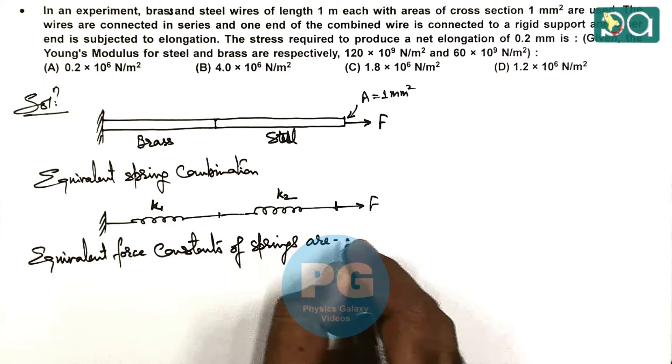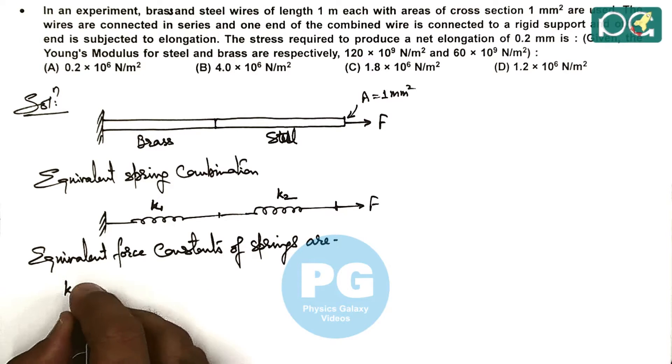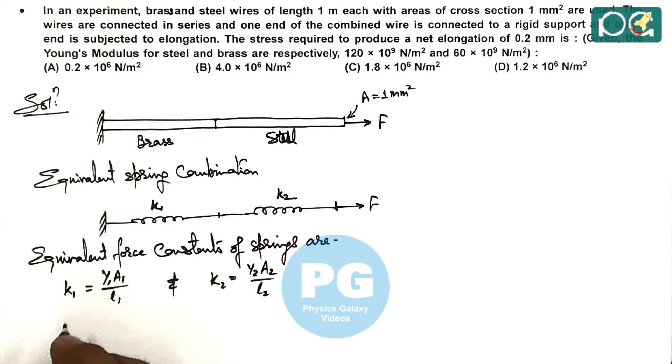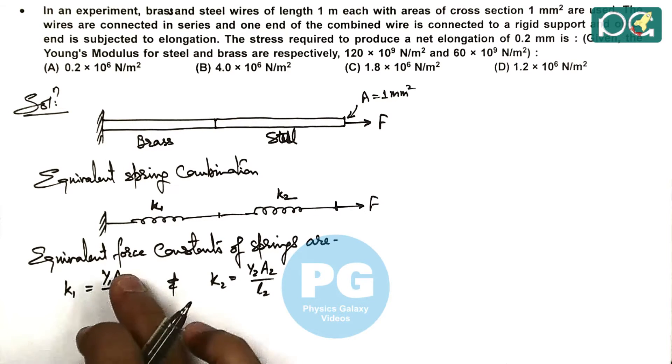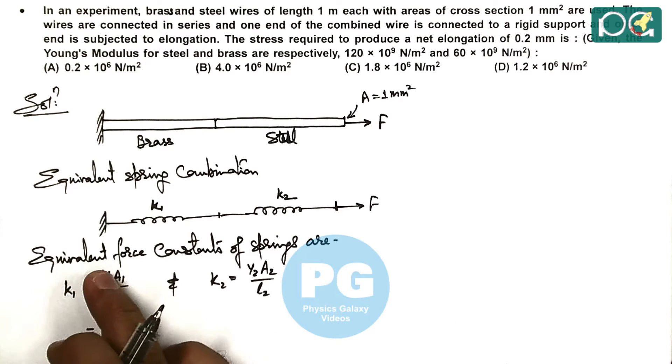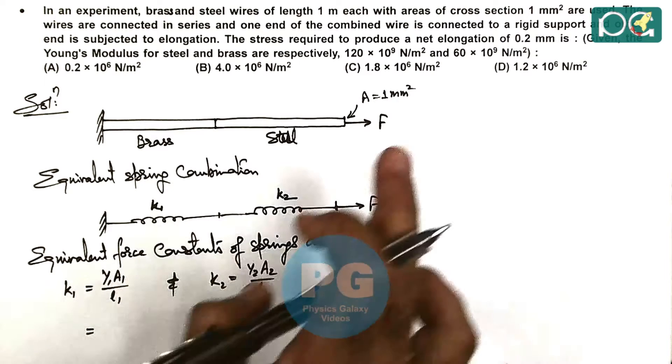Here we know the values of K1 and K2. We can write K1 as Y1×A1/L1 and K2 as Y2×A2/L2, or YA/L. Now in this case, if we substitute the values, area of cross section is same, length is also same, Young's modulus are different. So for brass, Young's modulus is 60×10^9.